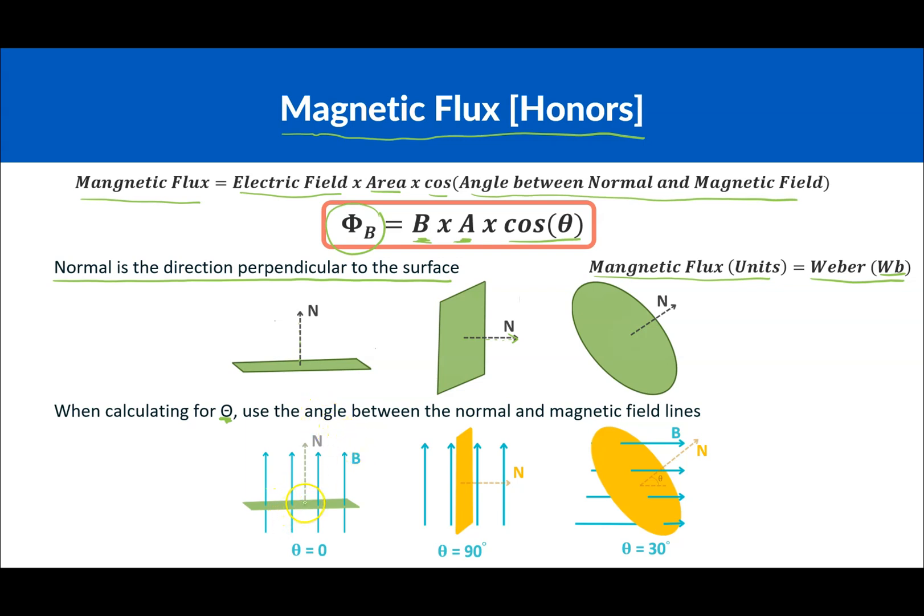So for this example, the normal is going straight up, and the magnetic field lines are also going straight up, meaning the angle between them is going to be zero. Okay, in this situation, the magnetic field lines are going up, and the normal is going to the right, so it's perpendicular, so it's going to be 90 degrees. And this one is kind of like at an angle, so we can say the normal is going to be like this, and that's going to be around a 30 degree angle.